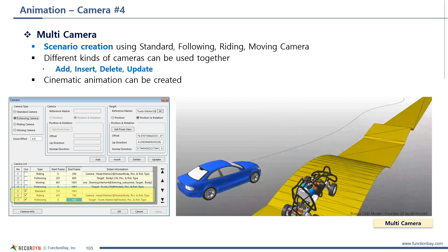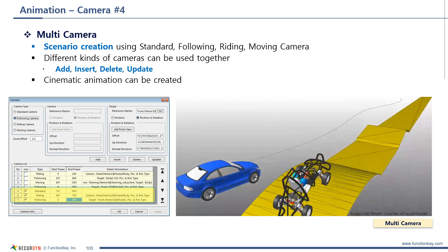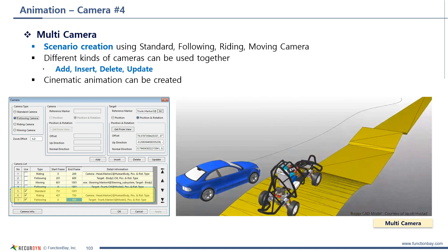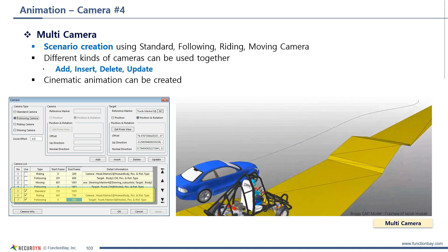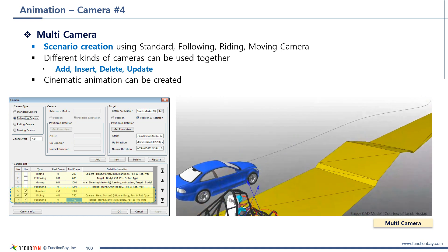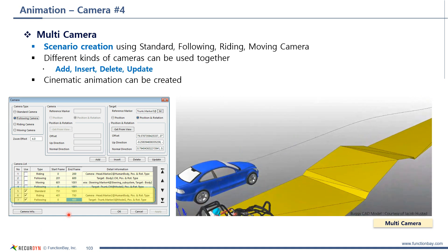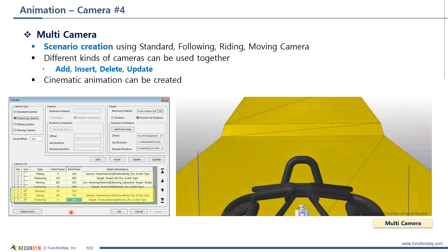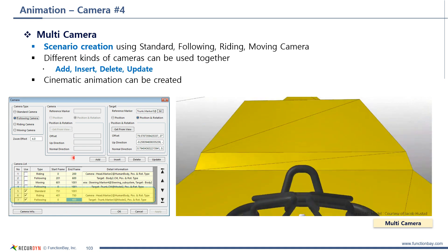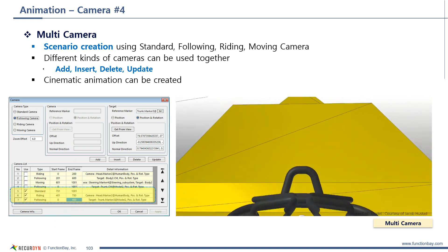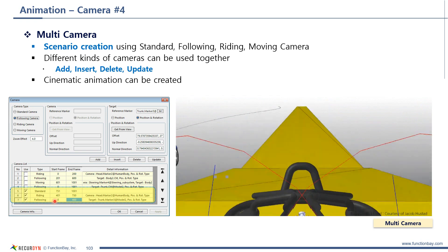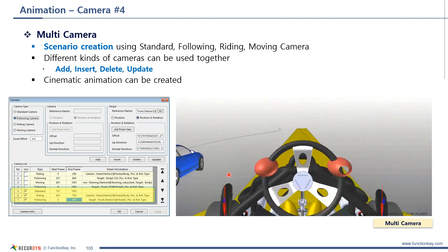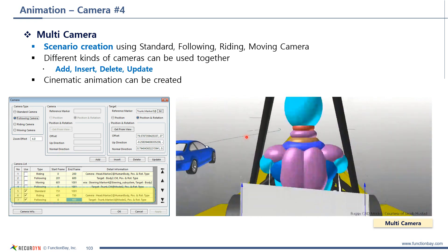Multi-camera is a combination of various camera types. You can create a scenario to display animation like a movie. As you can see, there is a list of several camera types, and you can use this to make an animation like this.